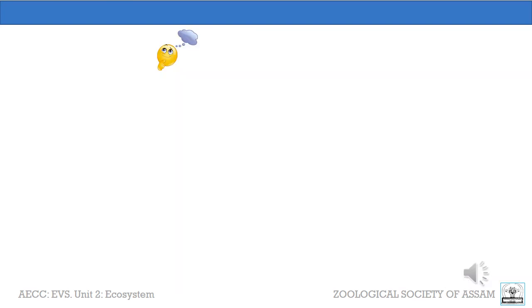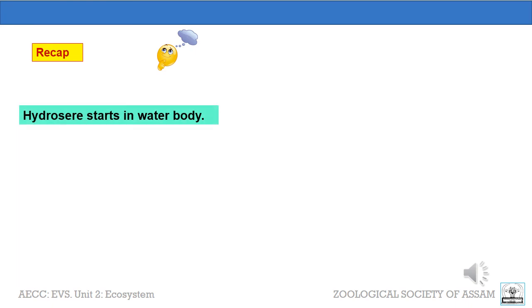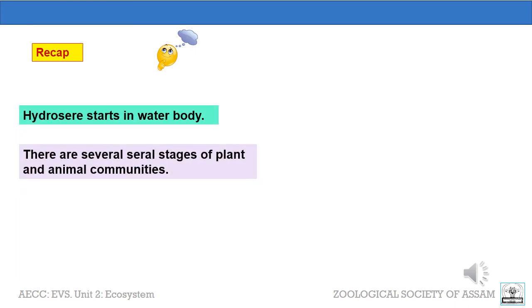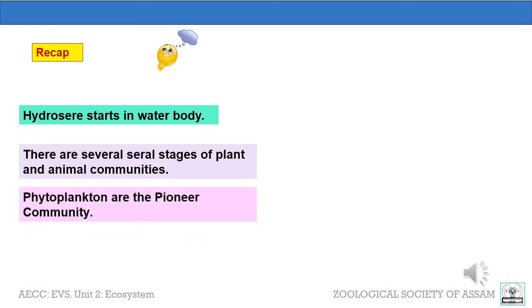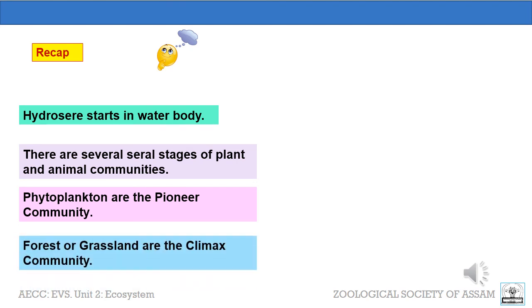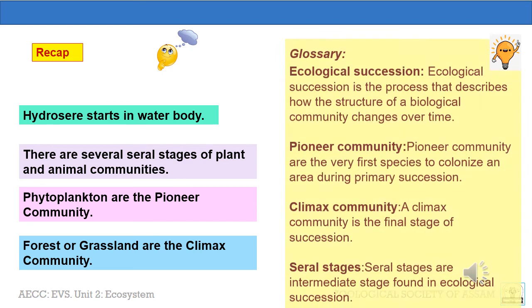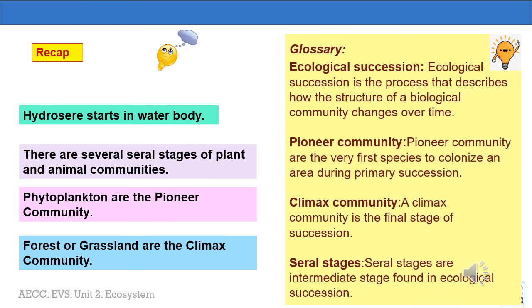Now let us recap. Hydrosere starts in a water body. There are several stages of plant and animal communities. Phytoplanktons are the pioneer community. The forest or grassland are the climax community. I have also added a few glossary terms for you to study.